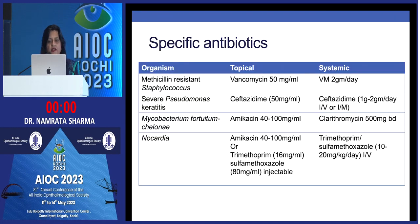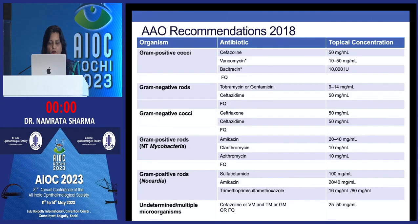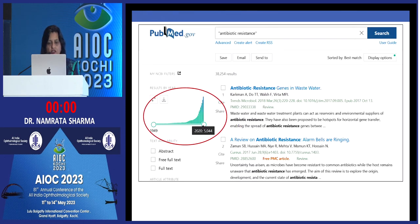Specific antibiotics should be given for specific organisms: vancomycin for MRSA, ceftazidime for severe Pseudomonas keratitis, amikacin and fortified drops for Mycobacterium fortuitum and chelonae, and amikacin and trimethoprim for Nocardia. These align with the AAO 2018 recommendations covering the drugs already discussed.